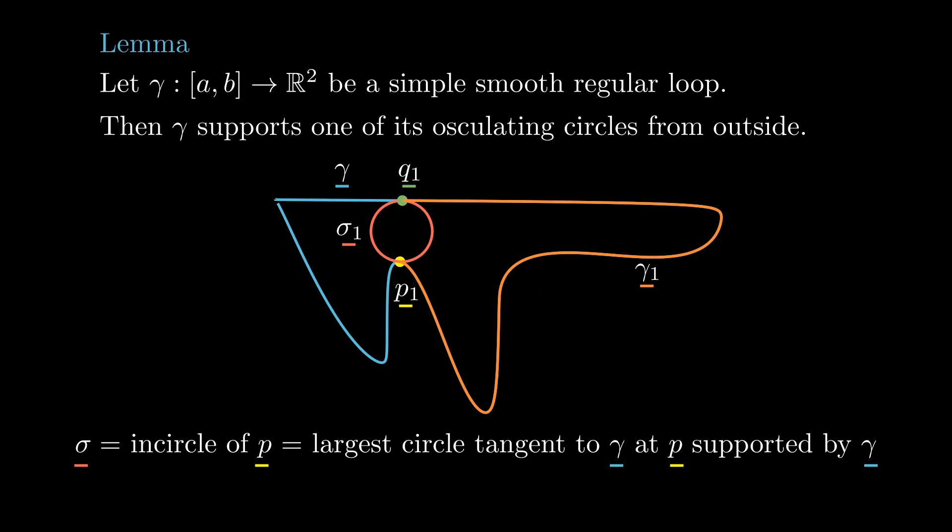Let gamma1 be an arc of gamma, possibly traveled in reverse direction, that starts at p1 and ends at the next point of intersection with sigma1, which we call q1. We define p2 to be the midpoint of gamma1 and let sigma2 be its in-circle.